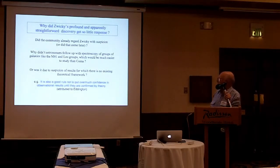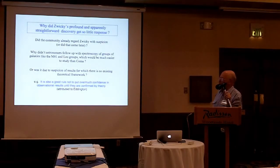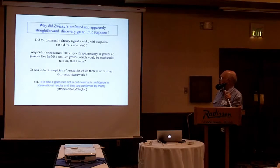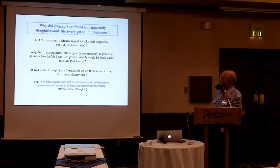Why did this profound and apparently straightforward discovery get so little response? Did the community already regard Zwicky with suspicion, or did that just come later? Why didn't astronomers follow up — what would seem a pretty obvious thing to do even at the time — with spectroscopy of groups of galaxies, like the M81 and Leo groups, which are just smaller clusters and would in fact be much easier to study than what Zwicky achieved in Coma? Or was it due to suspicion of results for which there is no existing theoretical framework? I suspect this is a big part of it.